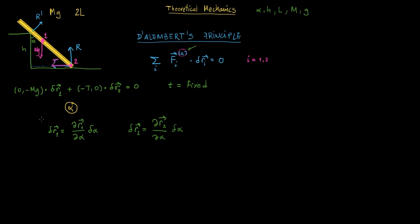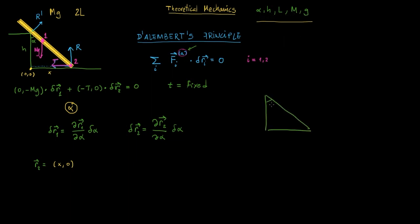Let's calculate first R2. Since R2 is a position vector, we need an origin for our coordinate system, so we set this corner as (0, 0). R2 will be (x, 0). We need to express everything as a function of alpha, h, l, m, or g. Doing some trigonometry: if this angle is alpha, this is h, and this is x, then tan(alpha) = x/h, so x = h·tan(alpha). So R2 = (h·tan(alpha), 0).